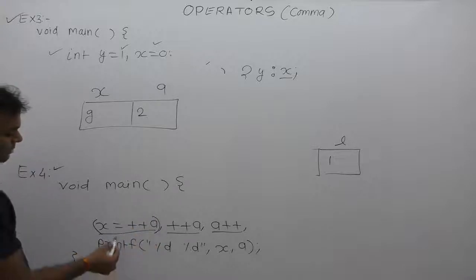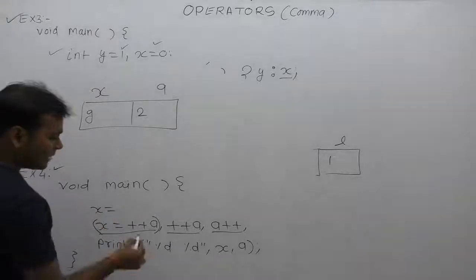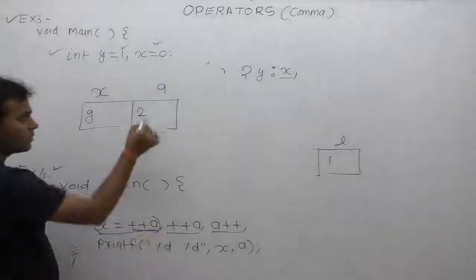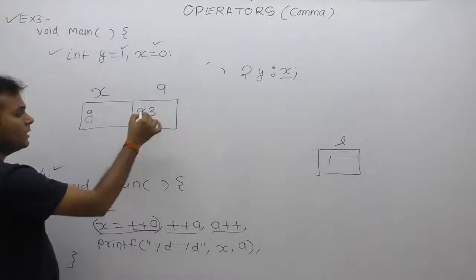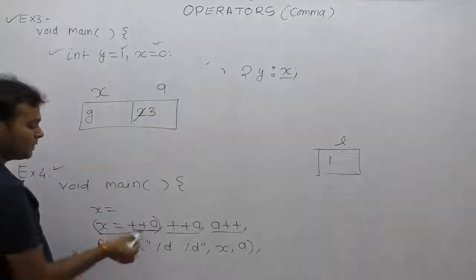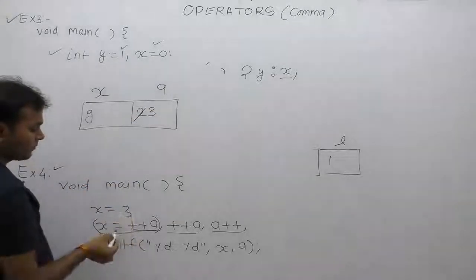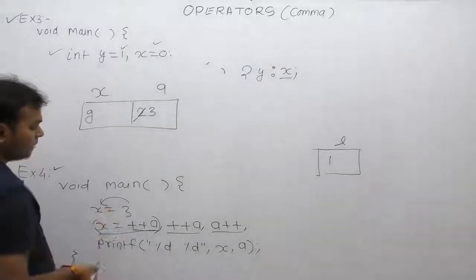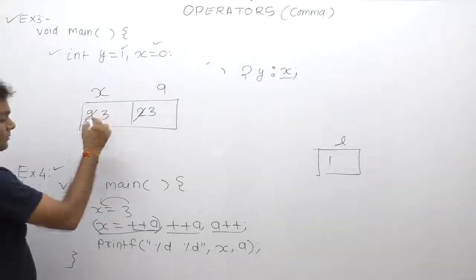Now solving the first expression: it is a pre-increment on a. First, a is incremented — a was 2, so it becomes 3. Then the value of a, which is 3, is used for replacement. So x is initialized by 3 via the assignment.